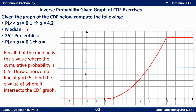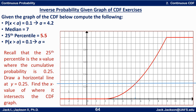Third problem: the 25th percentile. The 25th percentile is an x value where the probability to the left is 0.25. Move the horizontal line down to y equals 0.25, take it across and find the x value. It looks like it's about 5.5. So the 25th percentile, or first quartile, is about 5.5.